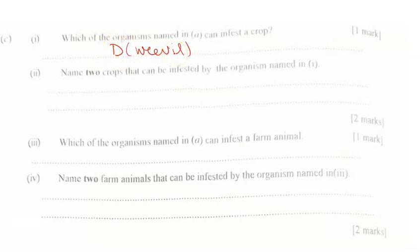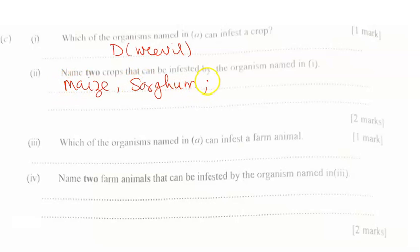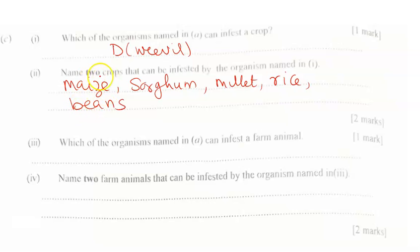Name two crops that can be infested by the organism named in A. There are many options. We have maize, millet, rice, and beans. We are required to name two, so any two of these will earn you the two marks.